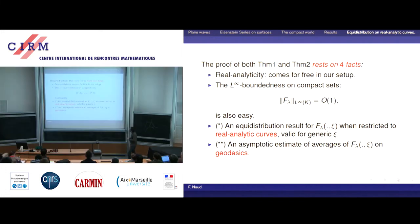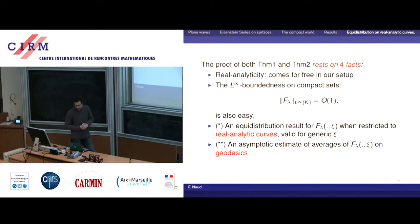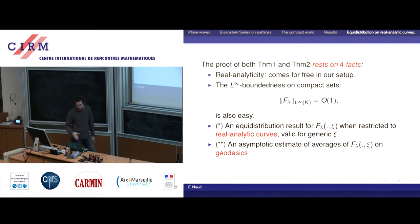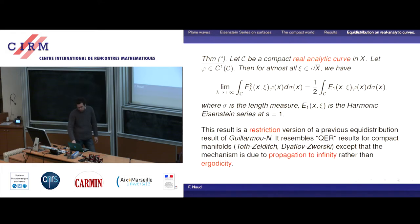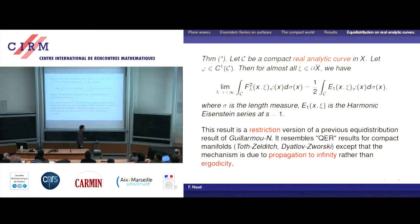These first two facts are very easy. Then we use two main results. The first is a QER-type result — an equidistribution result when you restrict eigenfunctions to curves, in this case geodesics, which works for fairly general curves. Real analyticity just helps at the technical level; for equidistribution it's not so important. We combine this with an asymptotic estimate of the average on a curve. This equidistribution result is also a result in itself.